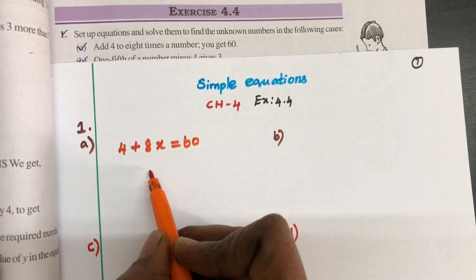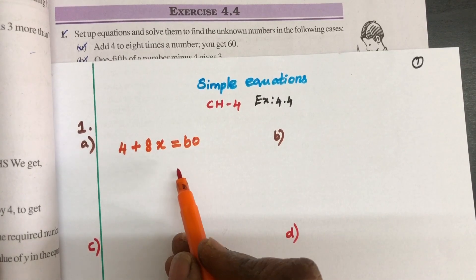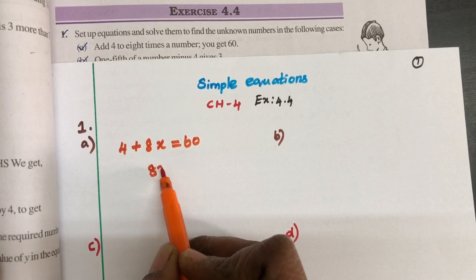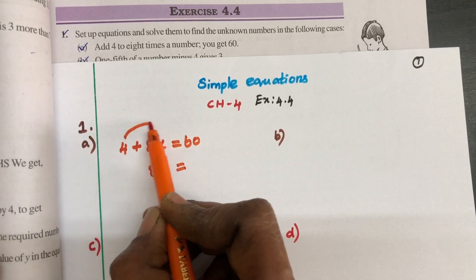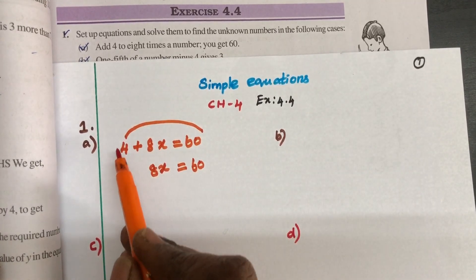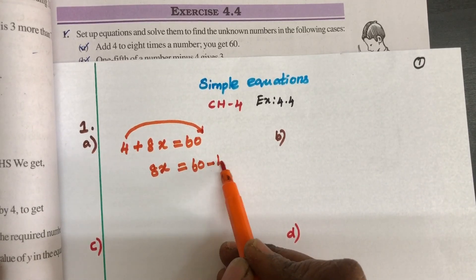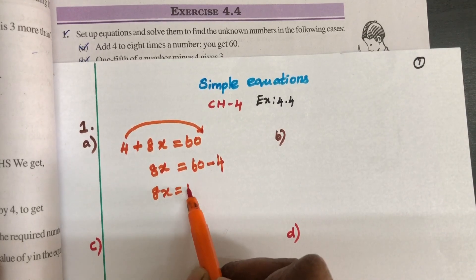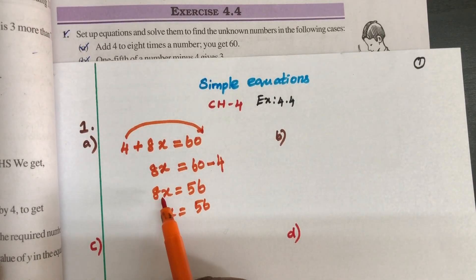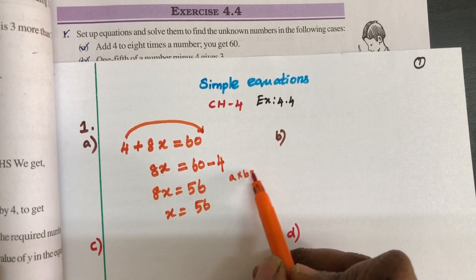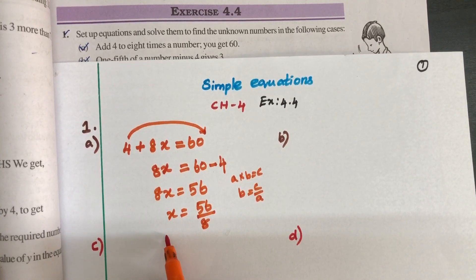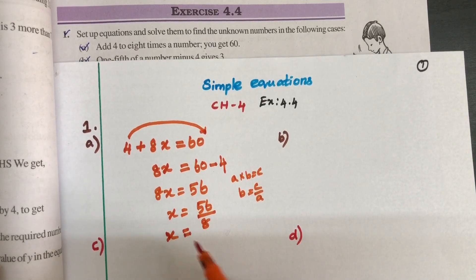Now find the unknown. We are going to separate the variable and find the value of x. Keep the variable term alone on the left-hand side and take the number to the right side. So this positive 4, while transposition, becomes negative 4. So 8x is equal to 56. x equals 56 divided by 8, so x equals 7.